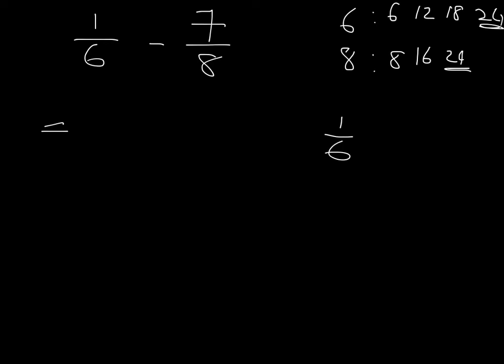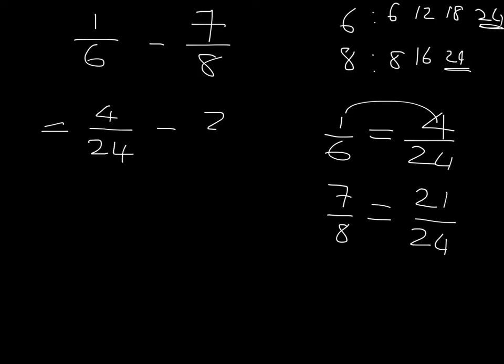We're going to take one sixth and we're going to take seven eighths. And we're going to write them now both with that denominator of 24. We've multiplied six by four to get 24. So we must multiply the one by four and we will get four. We've multiplied eight by three to get 24. So we must multiply the seven by three and we'll get 21.